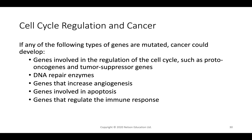Cancer can develop from mutations in genes involved in cell cycle regulation (proto-oncogenes or tumor suppressor genes), DNA repair enzymes, genes that increase angiogenesis (creation of new blood vessels — tumors need blood vessels to grow), or genes involved in apoptosis. If cancer cells can avoid programmed cell death, they can live and reproduce indefinitely. This is why cancer is such a broad term — many different mutations in many different genes can cause cancer in many different cell lines.